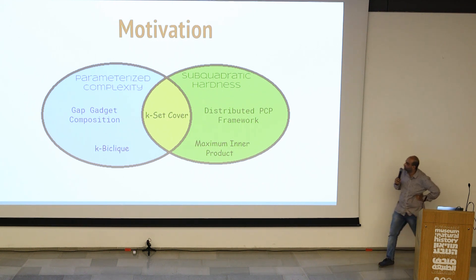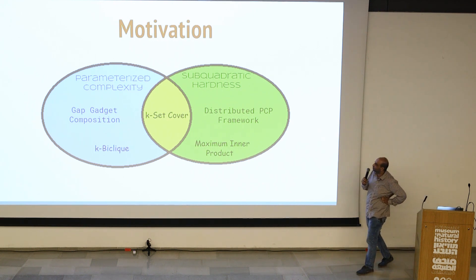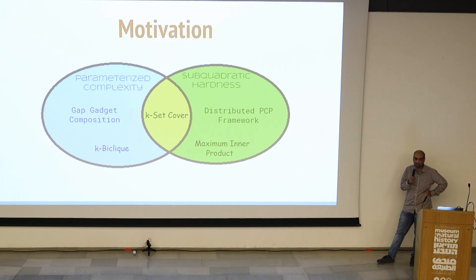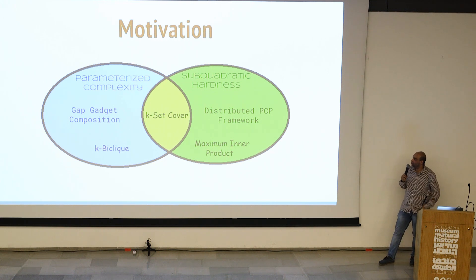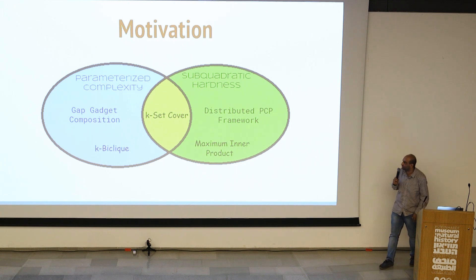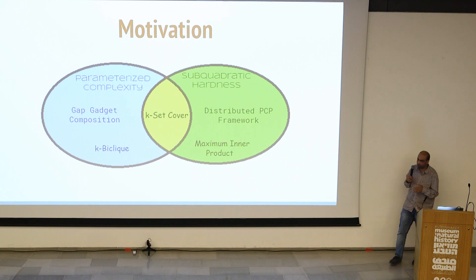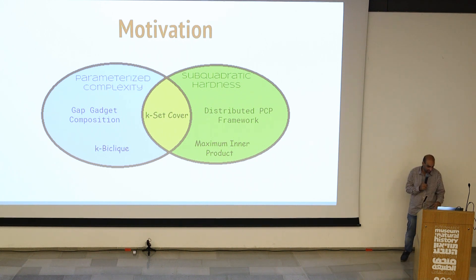There is an intermediate problem called K-set Cover, where you are given a collection of sets and you want to choose K sets that cover the entire universe. We know how to do hardness of approximation for this problem, but using two completely different techniques. I wanted to figure out whether we can use one to prove problems for the other.